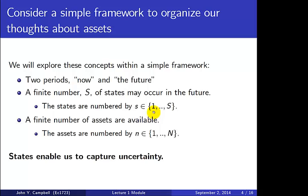We're also going to assume that only a finite number of assets are available, indexed by little n, which runs from 1 to capital N. This device of discrete possible states that may occur in the future is a very simple one — it enables us to capture uncertainty with a minimum of mathematical apparatus.